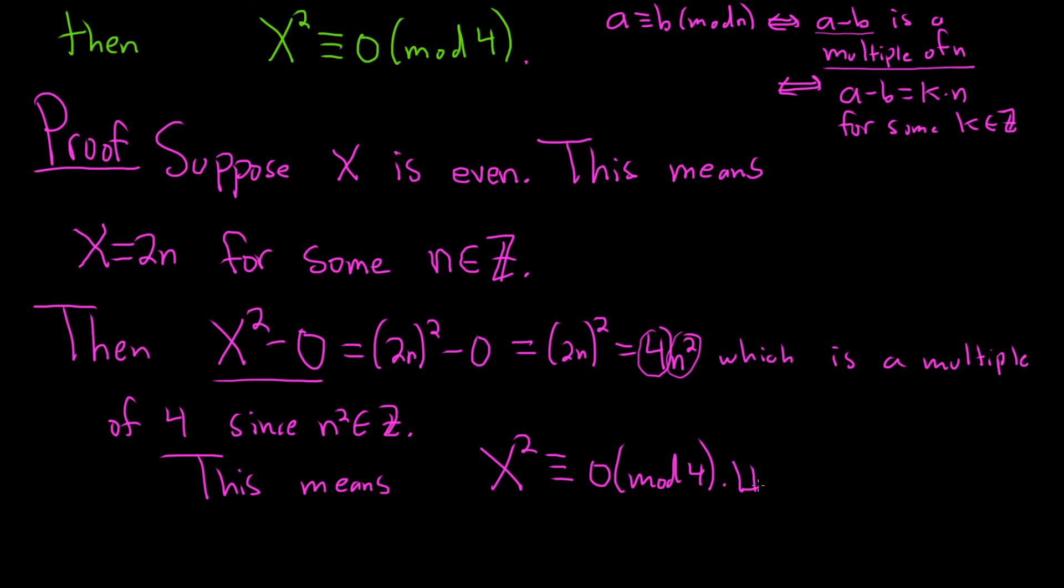So this means x squared is congruent to 0 modulo 4. And that completes our congruence proof. So a really simple proof, but it really does require that you understand the proof structure and what it means - what does this congruence actually mean? I hope this video has been helpful.